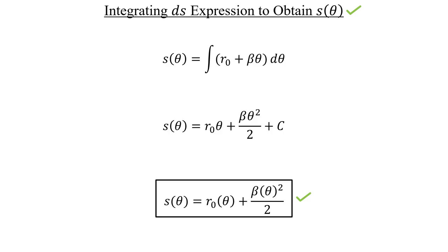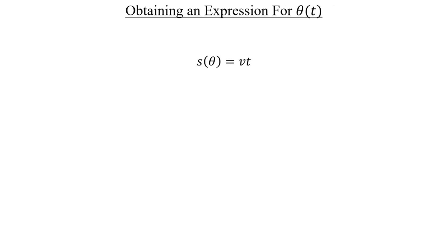For part B, we're told that the equation we just found is equal to Vt. We need to use this relation to figure out the total rotational angle as a function of time. Naturally, the first thing we should do is plug in the definition for S of theta. And if you look closely, we can see a pattern going on here. We have a term with theta squared, a term with theta, and then something else on the other side with no theta at all.